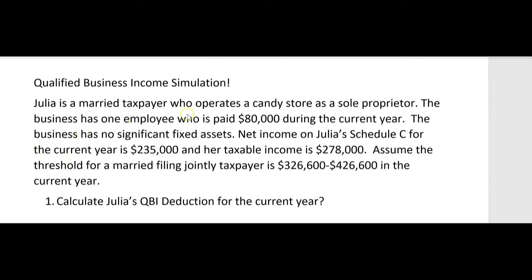Here are the facts. Julia is a married taxpayer who operates a candy store as a sole proprietor. The business has one employee who was paid $80,000 during the current year — that might be important. The business has no significant fixed assets. Net income on Julia's Schedule C for the current year is $235,000 — that also could be very important. And her taxable income, always important for the QBI deduction, is $278,000.